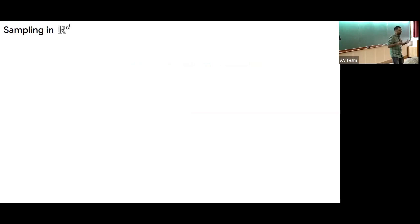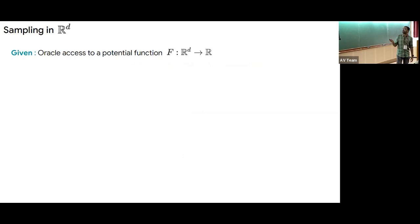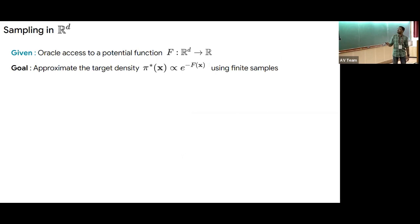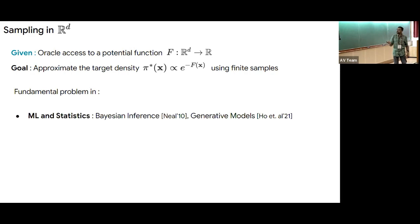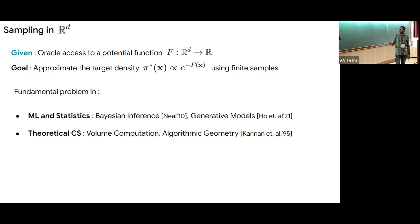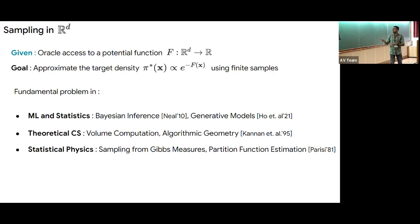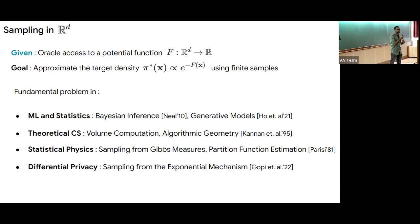Let me introduce the problem of sampling in R^d, the real space in D dimensions. We have oracle access to a potential function f from R^d to R. We want to approximate the target density π* of x, proportional to e to the minus f of x, using finite samples—that is, we want to get samples IID distributed as this distribution. This is a fundamental problem in many areas: in ML and statistics it is at the heart of Bayesian inference and generative models; in theoretical computer science, volume computation and algorithmic geometry; in statistical physics, describing Gibbs measures and partition function approximation; and in differential privacy, where sampling from the exponential mechanism ensures differential privacy.